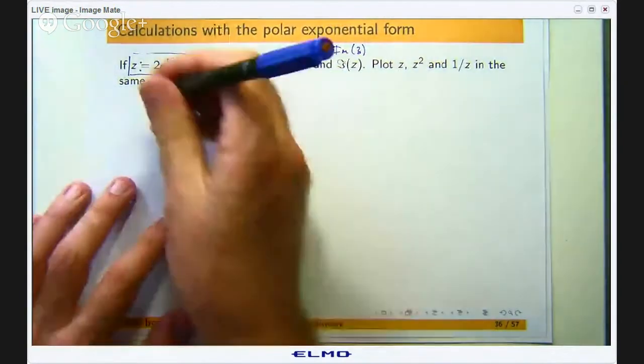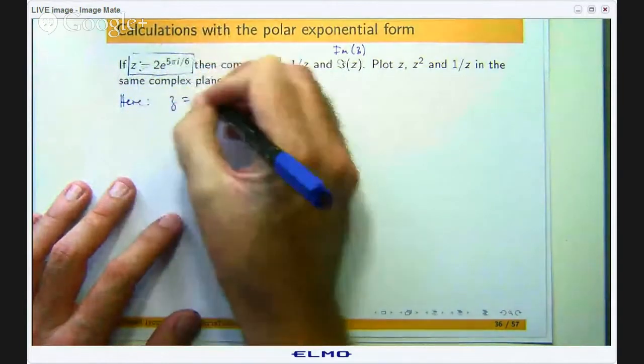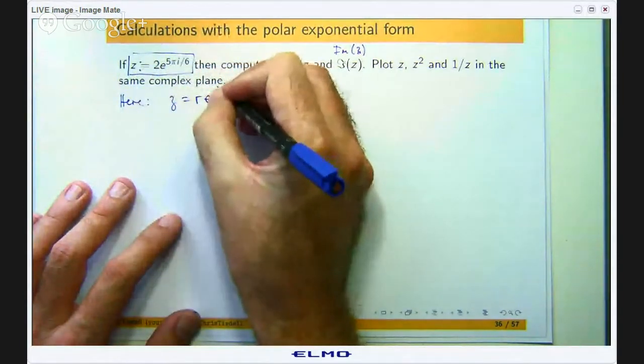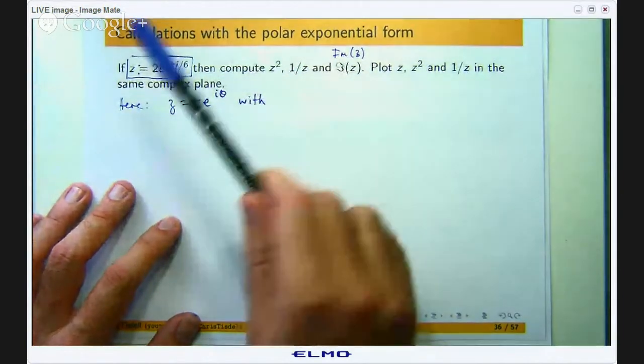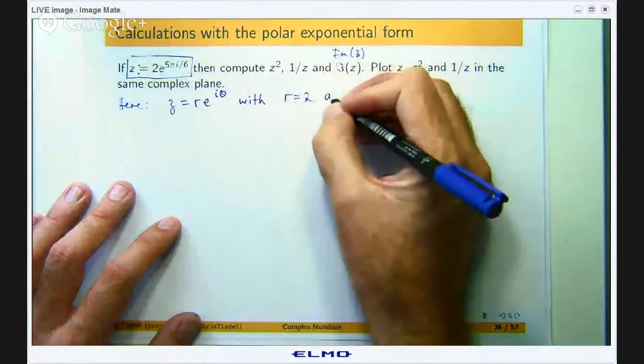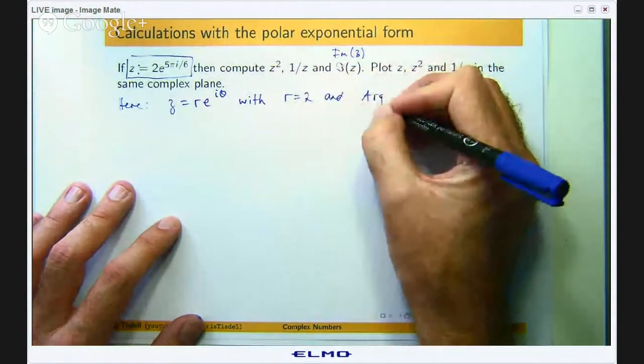Alright so in here we see that z is in this polar exponential form r e^(iθ) with r equals 2 and theta or arg(z) as we write it sometimes